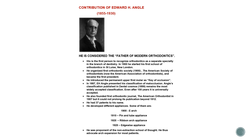In 1900, Angle started his first school of orthodontics in St. Louis. He organized the first orthodontic society in 1900 — the American Society of Orthodontists, now known as the American Association of Orthodontists — and became its first president. He also introduced the permanent first molar as the key of occlusion, as stated in Angle's classification of occlusion.